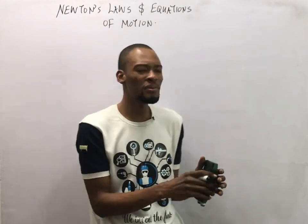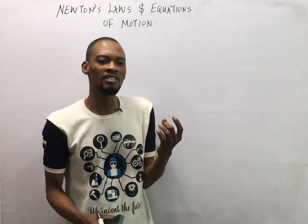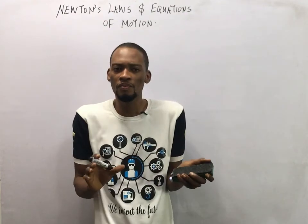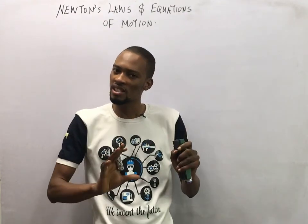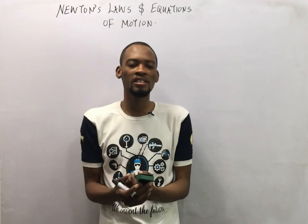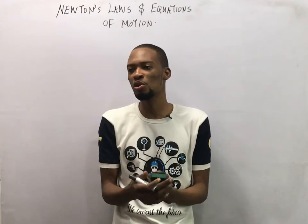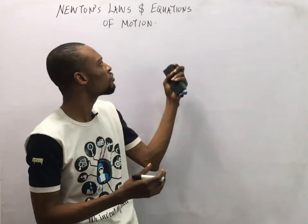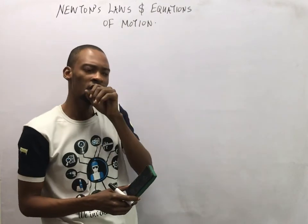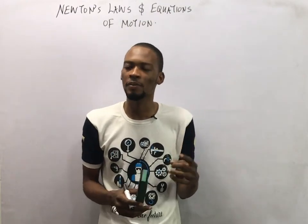So all objects have inertia. Inertia is the reluctance of a body to move when at rest, based on its mass, or its reluctance to stop if it is already in motion. Newton's first law is most times regarded as the law of inertia.